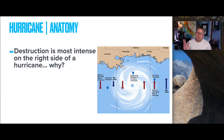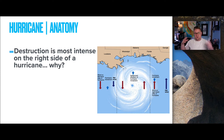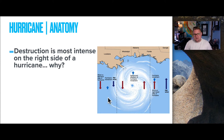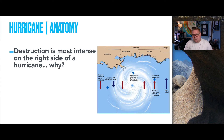Destruction is most intense on the right side of a hurricane. In this diagram showing the Gulf Coast, the storm is moving toward Mississippi and Alabama. Because the hurricane is spinning counterclockwise as a low-pressure system, the entire storm is deflected towards the right, and the wind on the right-hand side is being thrown outward. This makes the damage on that side more aggressive and intense.